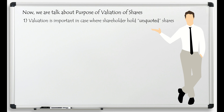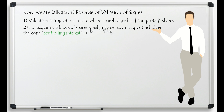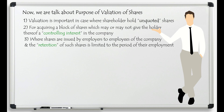The second reason is acquiring a block of shares, which may or may not give the holder controlling interest in the company. For example, Reliance Industries recently bought 37.7% of the total shares of Alok Industries, a textile company. This is called a block deal — buying shares of another company on a large scale. When a block deal happens, the acquiring company tries to find the actual real value of those shares to buy them at a reasonable price.